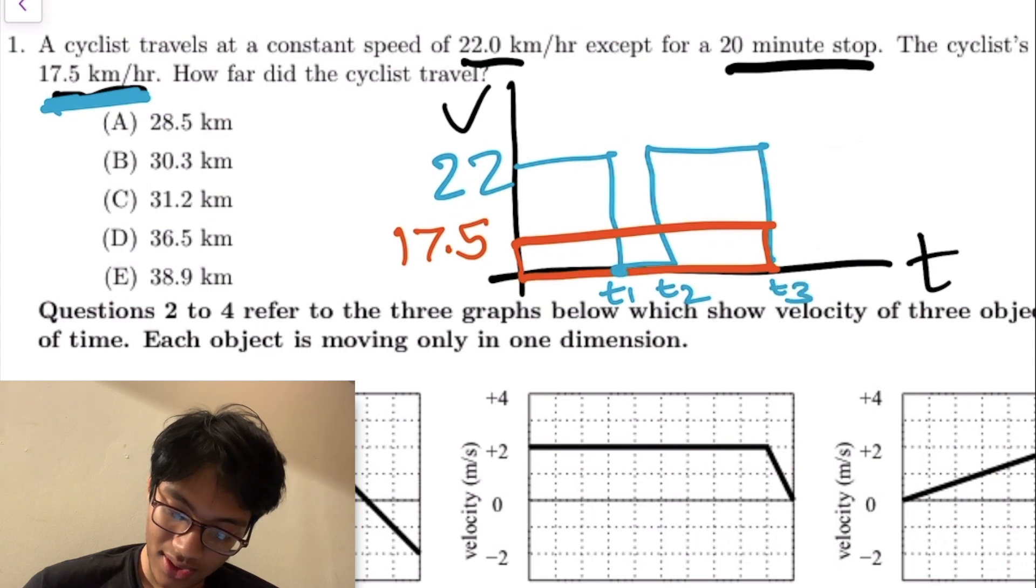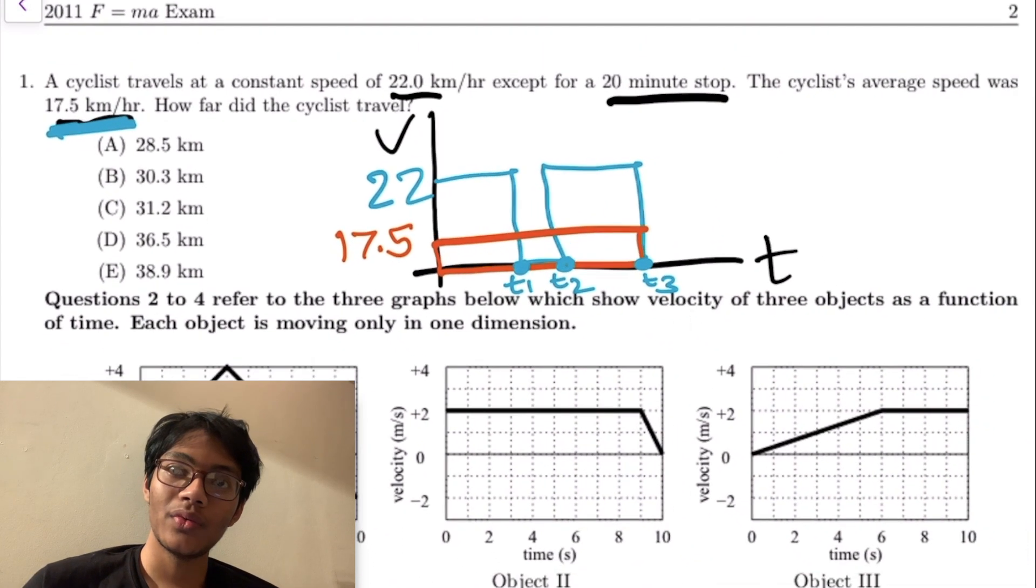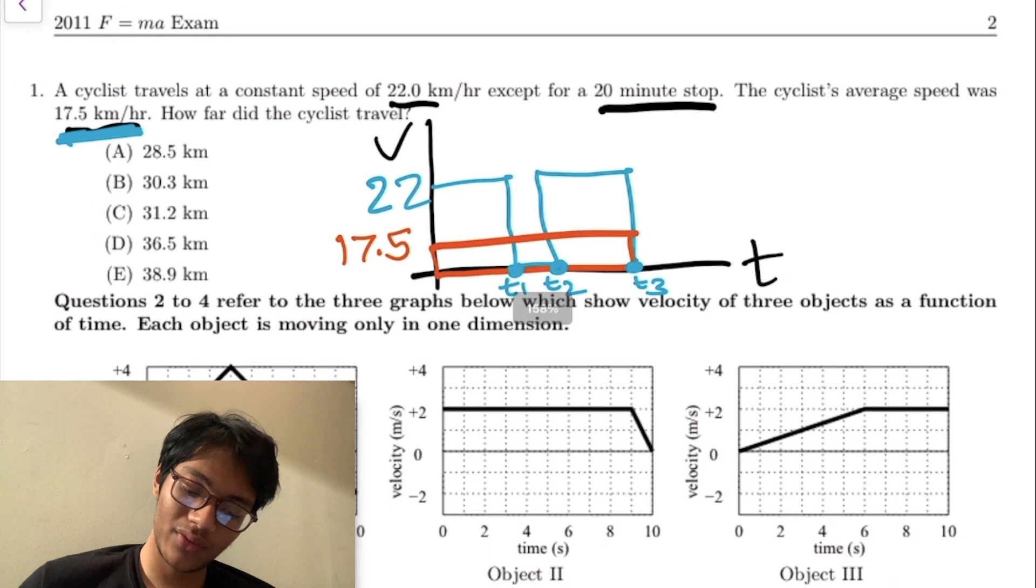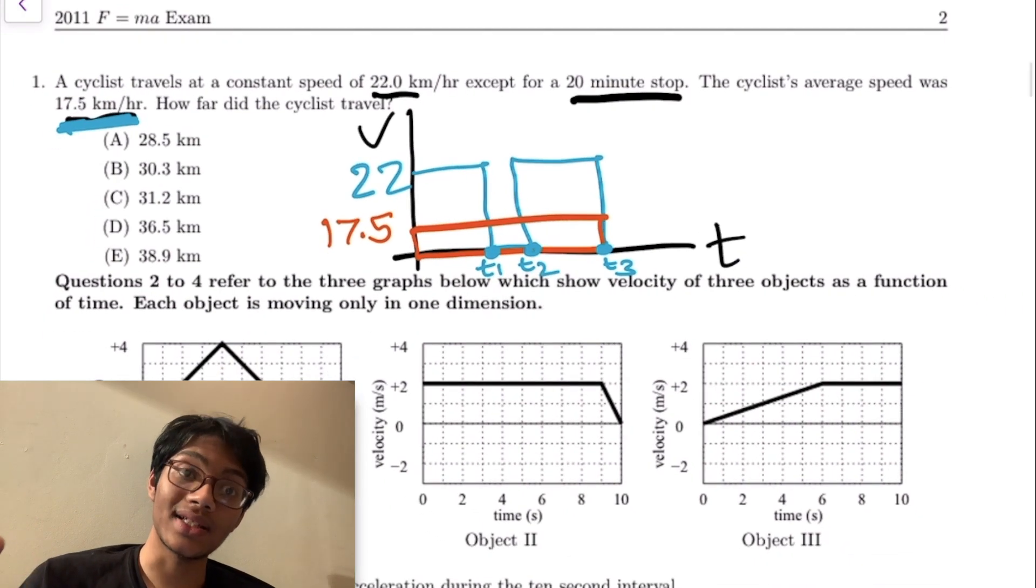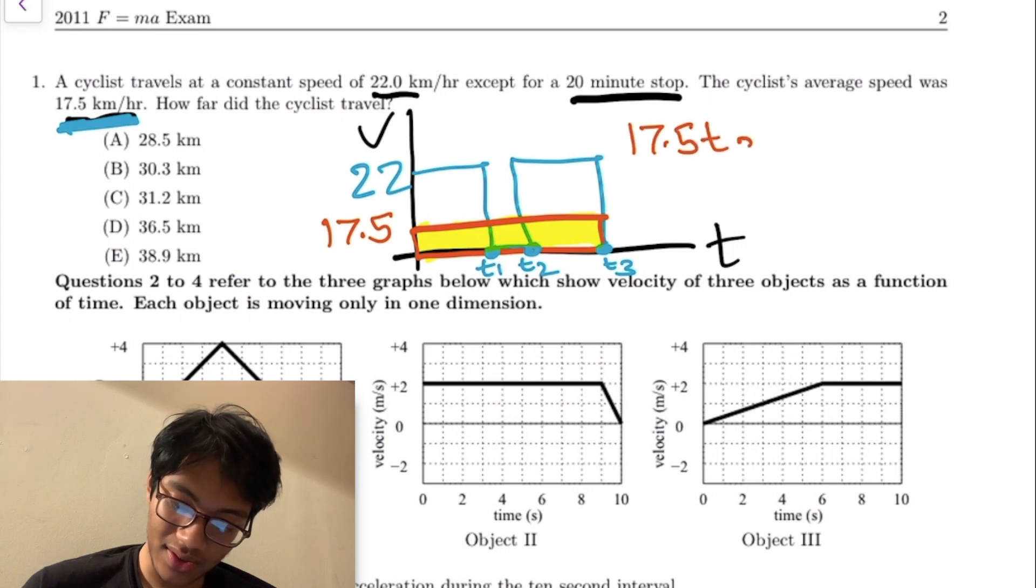t1 is when he starts his break, t2 is when he ends his break, t3 is when he ends the whole ride. With this critical information, can we find out how far the cyclist travels? Yes we can, because now we can write the area under this curve as the distance that the cyclist travels. That would be 17.5 times t3. We're going to have the area under this curve plus the area under this curve - add those two suckers up.